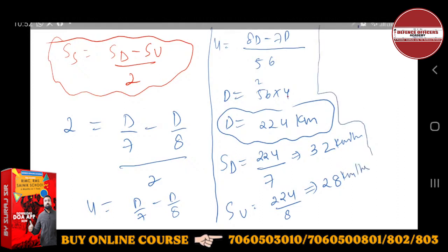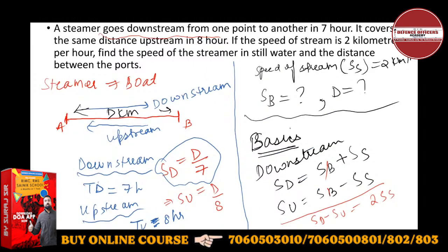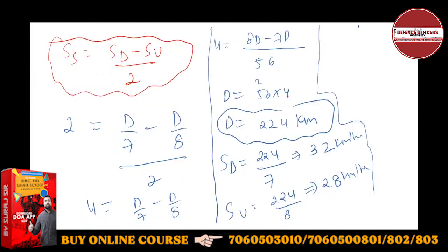Speed of boat equals SD minus SS. Speed of boat equals SD minus SS. SD is 32 minus SS which is 2, giving you 30 kilometers per hour. Speed of boat is 30 kilometers per hour. You can also calculate it using the other formula.